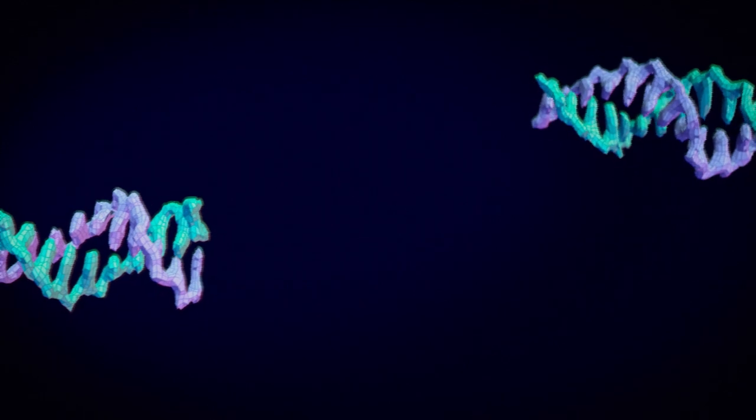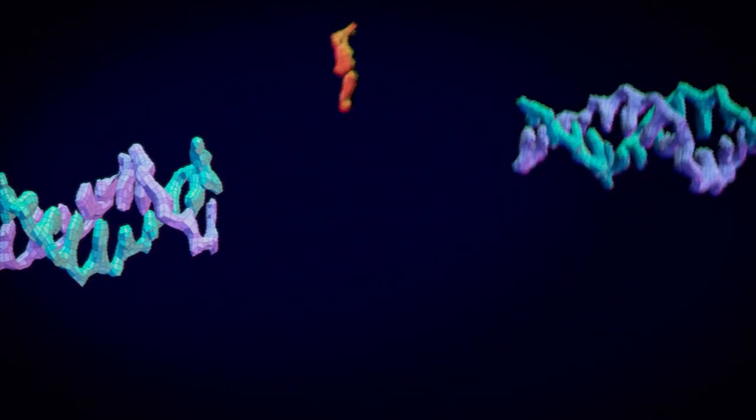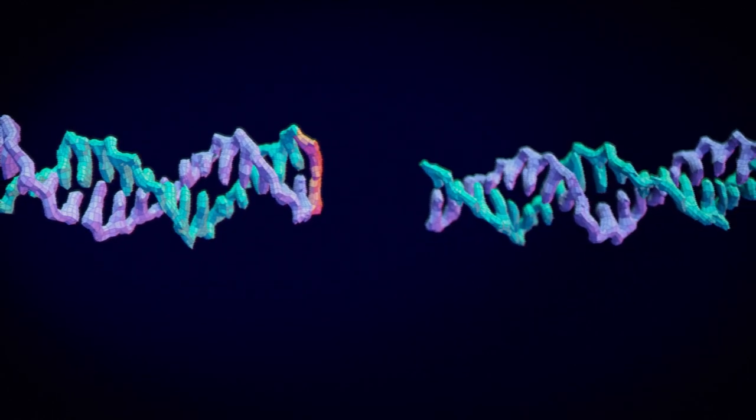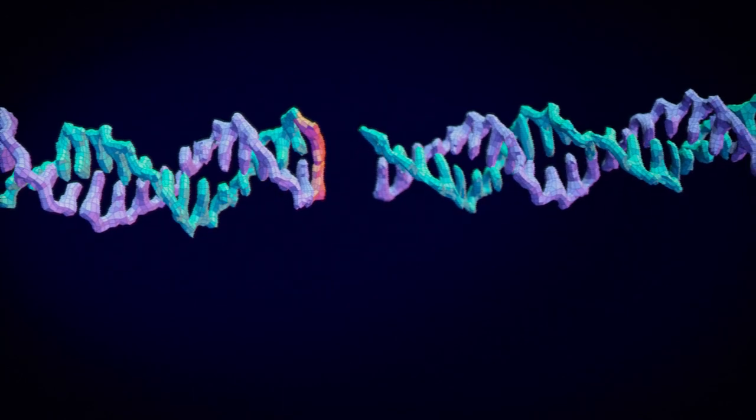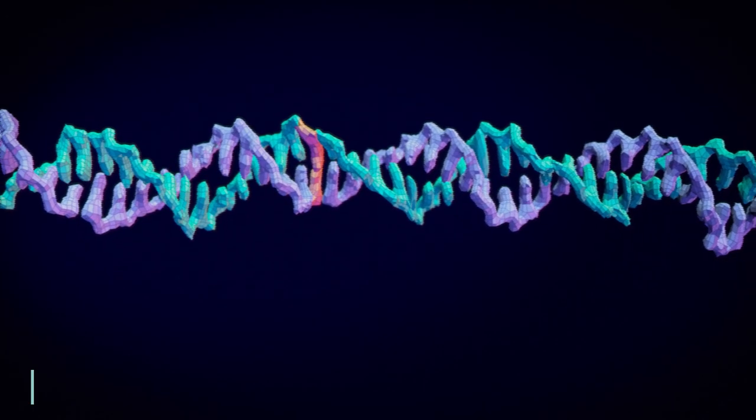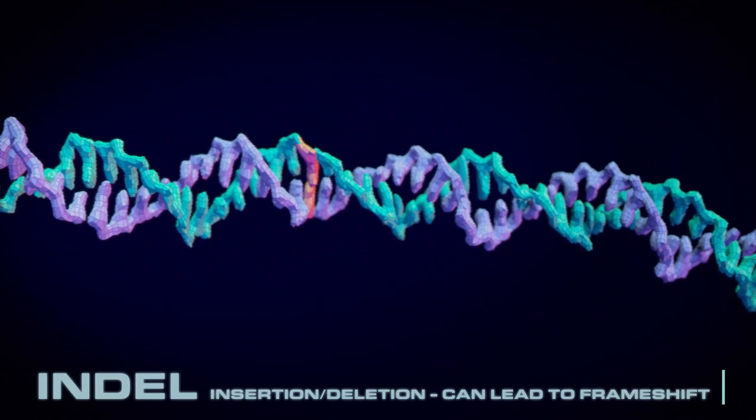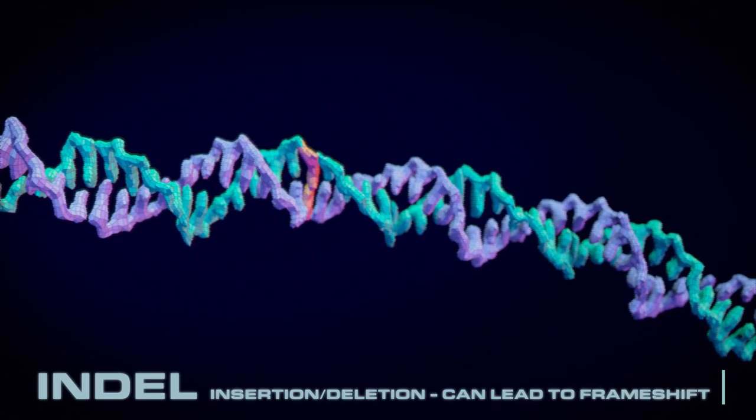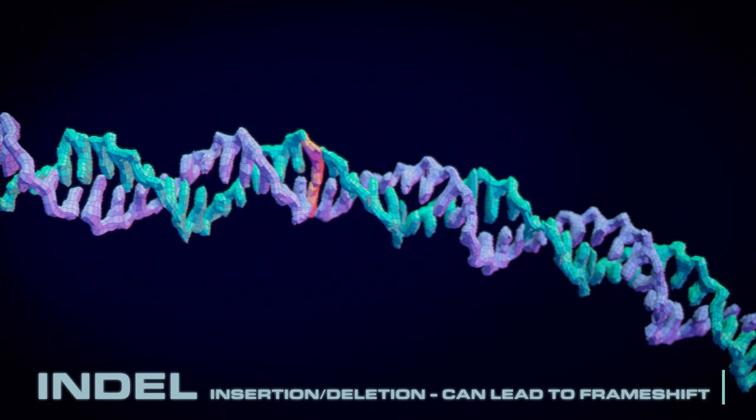The first thing is by doing nothing and letting the cell fix the double strand break itself. But cells are rubbish at fixing double strand breaks, so will often end up accidentally inserting or deleting bits of DNA. These indels mean the order of the sequence can get pushed out of the reading frame, and the cell will stop making your protein.